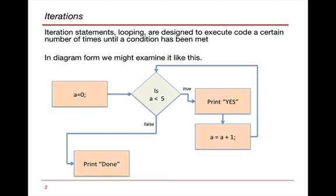So this is what the diagram looks like. We'll start with a variable a is equal to zero. We will test to see is a less than five, which in this case it is. And since that's true, we will then print yes. I will then have an iteration statement, or an incrementer, that will basically add one to a, in this case.